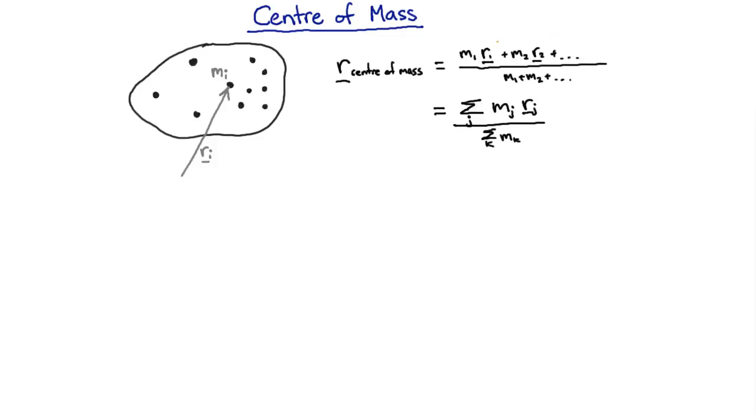First of all it has units of position, so this is a position vector and this is a mass, so the top line is a mass times a position and the bottom line is a mass, which leaves us with a position.